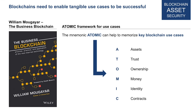One important note: many use cases will touch different areas of this framework simultaneously. A use case can be about assets and money at the same time. Bitcoin is a good example — it's a way of payment, you can use it as money, but it's also considered an asset. And of course it's also trustless, because users of the Bitcoin network do not need to trust each other. This atomic framework is a useful way to conceptualize the different advantages and use cases that blockchain can bring to the table.